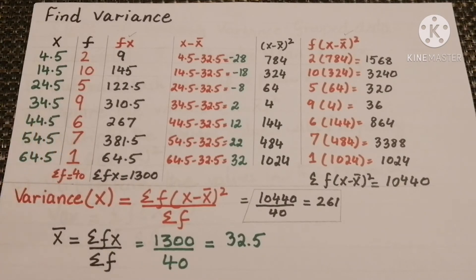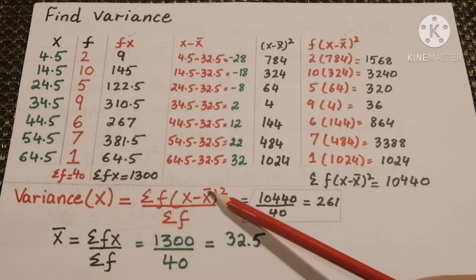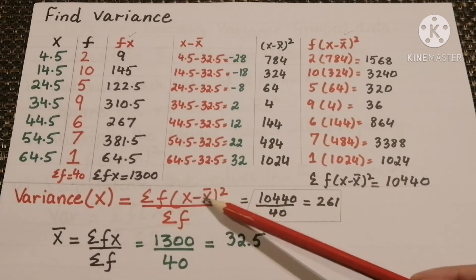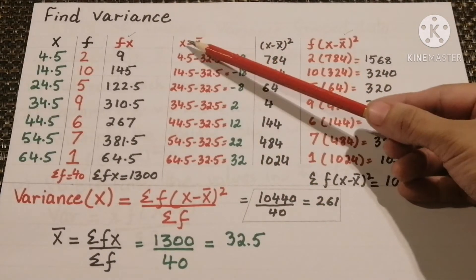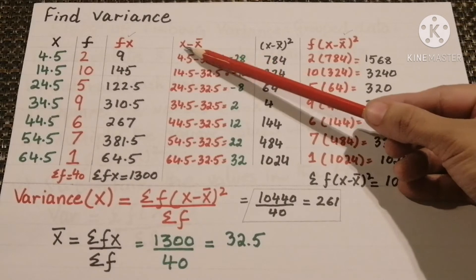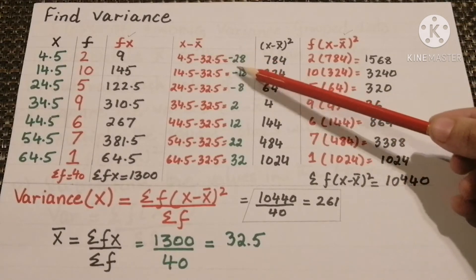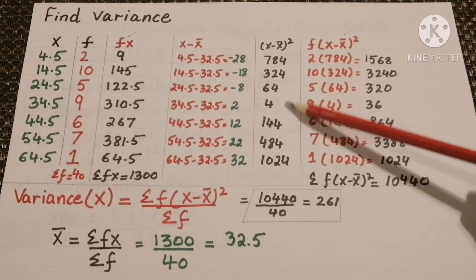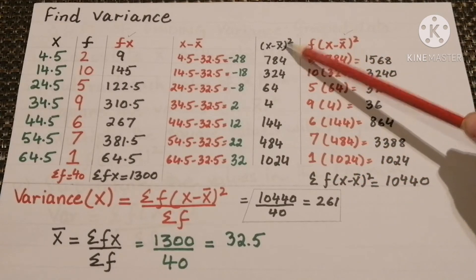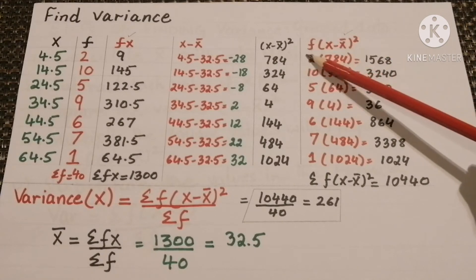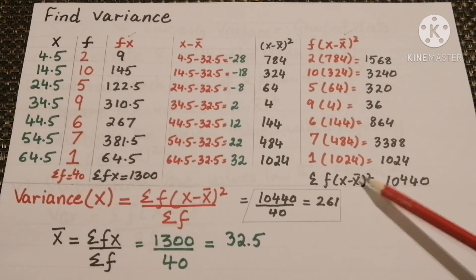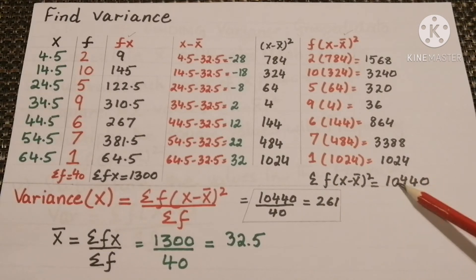Now for the variance, we use the formula: sum of f(x minus x̄)² divided by sum of f. We make a column for (x minus x̄), subtracting the arithmetic mean from each x value, then we square those values to get (x minus x̄)². Next, we multiply this column with the frequency column f to get f(x minus x̄)². Adding all these values gives sum of f(x minus x̄)² = 10440.